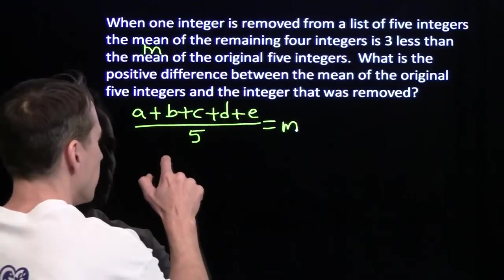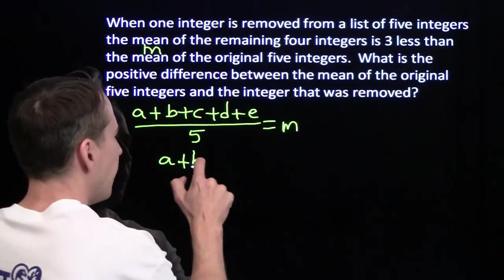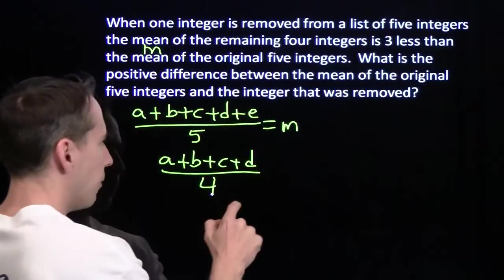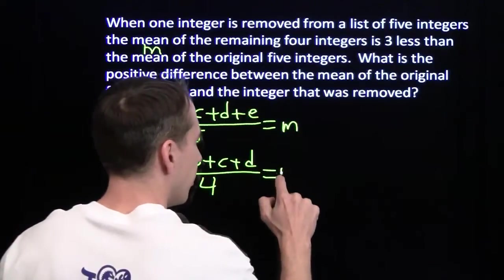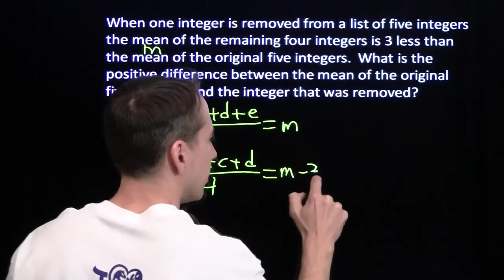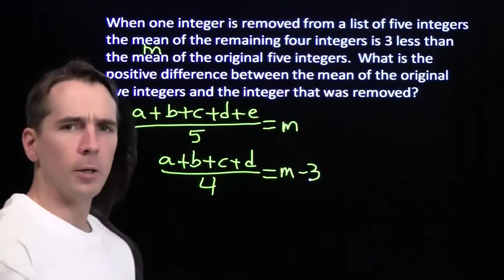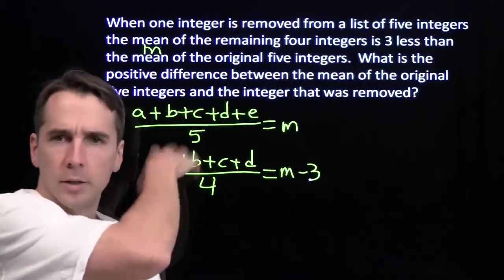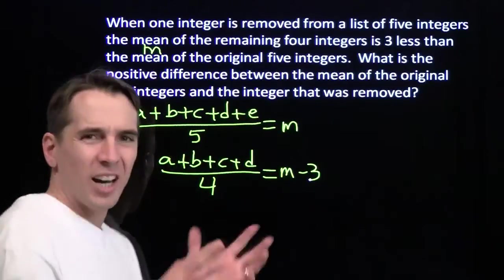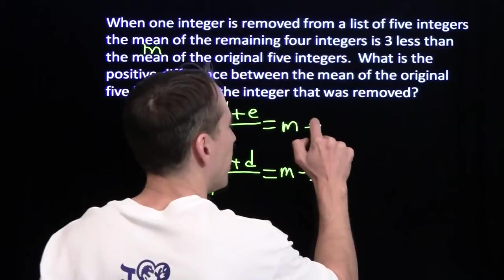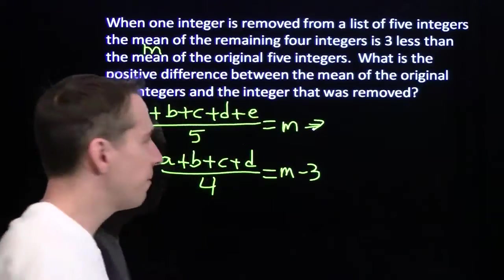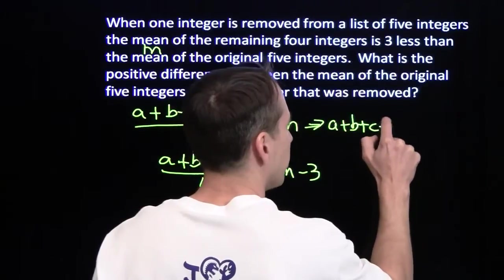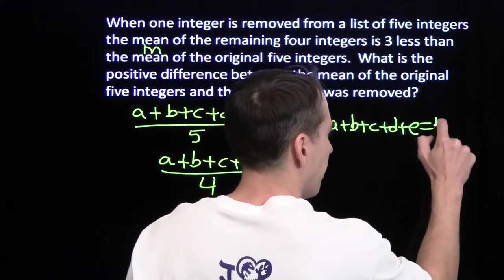That's an equation. Four integers I have left are A, B, C, and D. And the mean of those, divide by four, have three less than the mean I had up here. Yuck. Now, first thing I'm going to do with these, I'm going to get rid of these fractions, because fractions, eh. I'm going to multiply this top equation, multiply both sides by five. And I'm going to have A plus B plus C plus D plus E is five M.